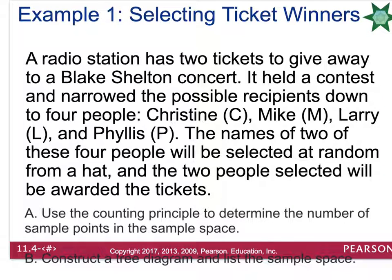Let's look at an example of creating a sample space from a tree diagram. A radio station has 2 tickets to give away to a Blake Shelton concert. It held a contest and narrowed the possible recipients down to 4 people: Christine, Mike, Larry, and Phyllis. The names of 2 of these 4 people will be selected at random from a hat, and the 2 people selected will be awarded the tickets.